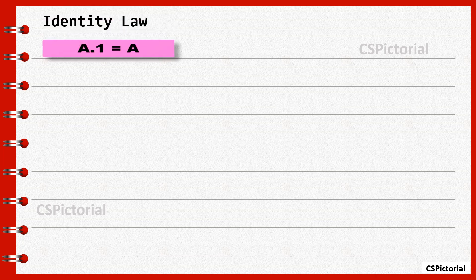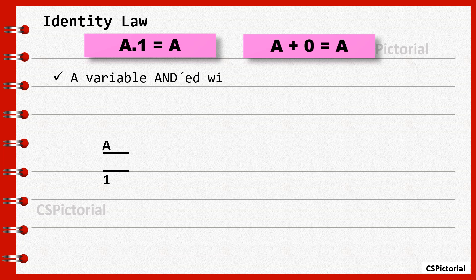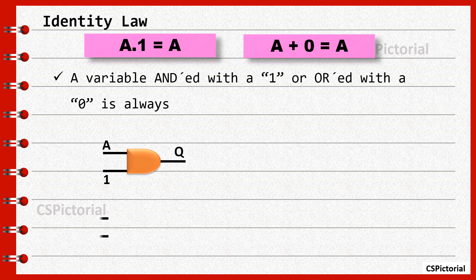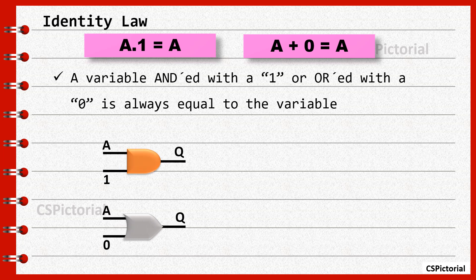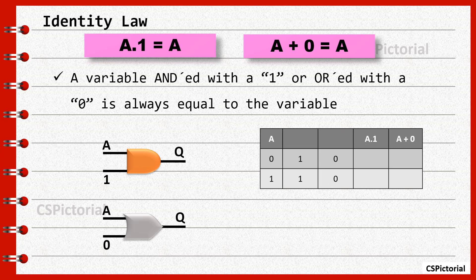The next is identity law. Any variable ANDed with 1 or ORed with 0 is always equal to the variable. This law is quite similar to mathematical algebra. We know that the AND operation output is 1 only when both inputs are 1. In this case when one input is always set to 1, then the AND operation output will be the same as the input variable.